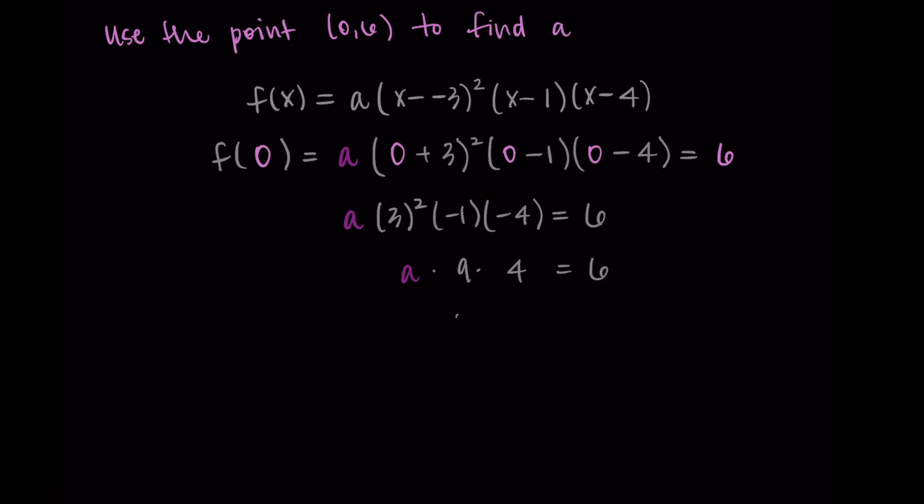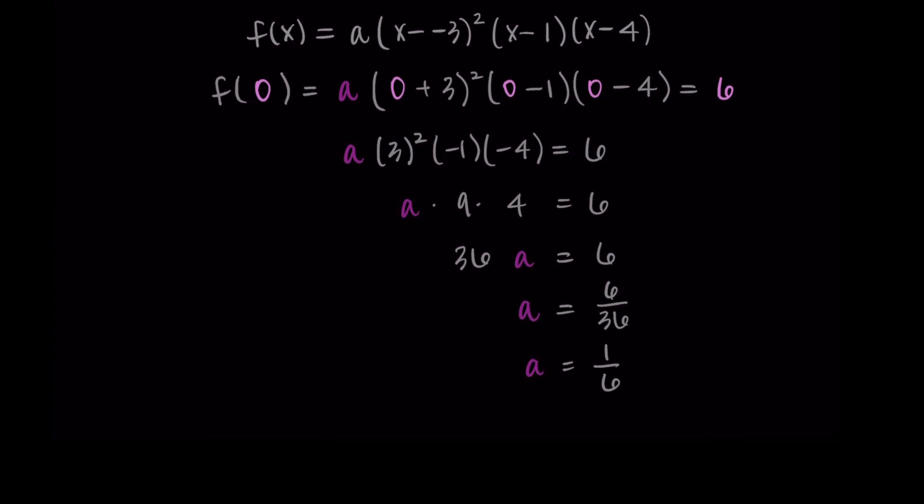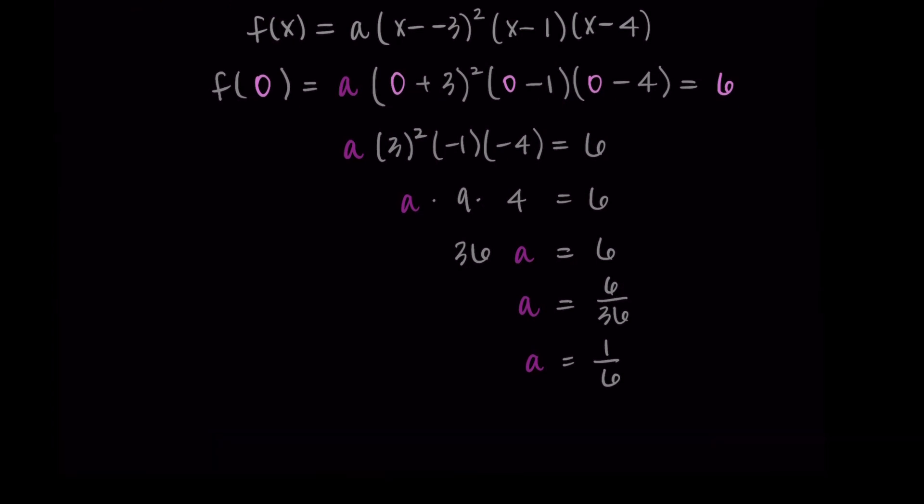Then nine times four is thirty-six, so I'm getting thirty-six a is equal to six. Now we divide both sides by thirty-six to isolate a, and I'm getting a is equal to six over thirty-six, which is equivalent to one over six. So one sixth is my a value, and this will be my final answer for my polynomial with minimal degree.